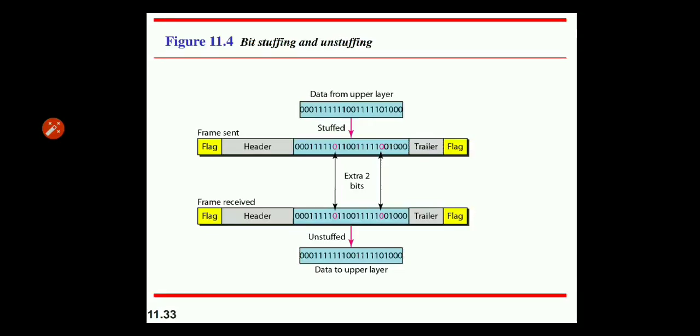If zero and five consecutive ones bit are encountered, extra zero is added and this extra bit is eventually removed from the data by the receiver. So you can say that in that case they can unstuff the data.